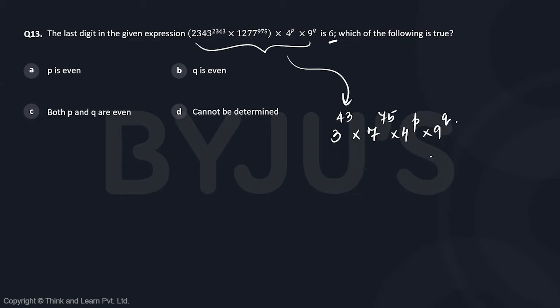In order to find the last digit, you only need the last digit of the base and the last two digits of the power. Hence this transformation.